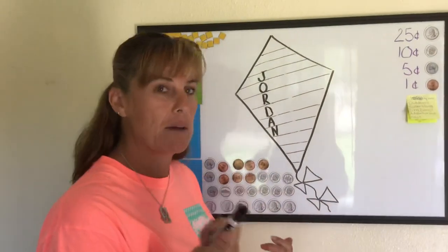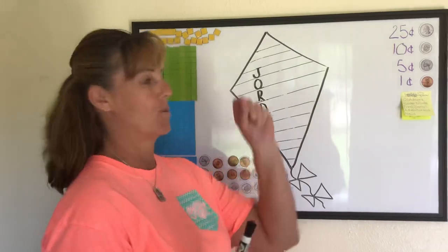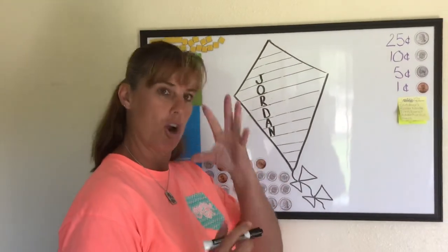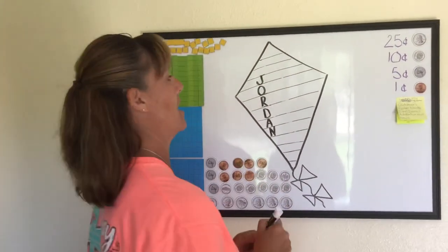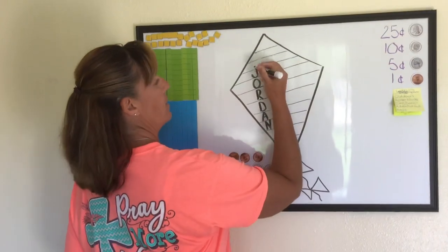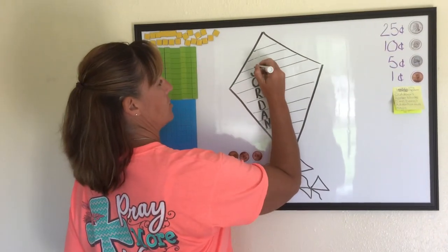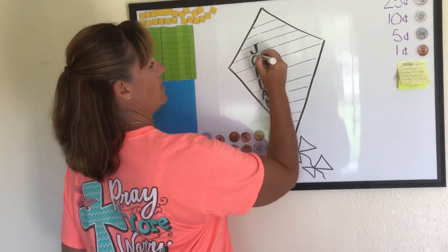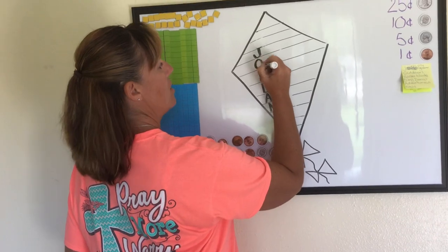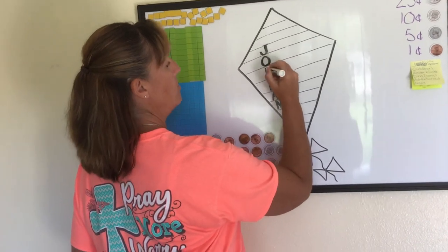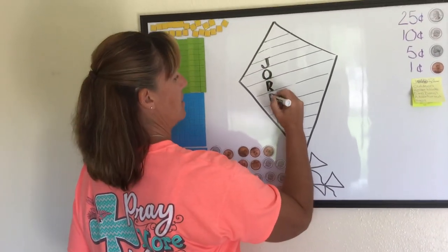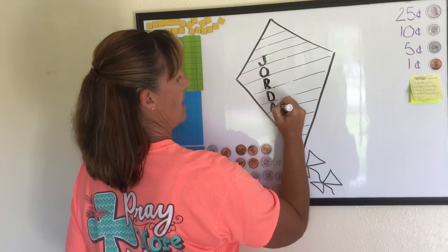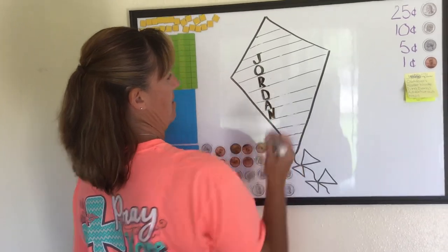If you have a big black marker or a pencil, write it really, really deep and dark so it stands out. Write all of the initials for your name. For Jordan, it's J-O-R-D-A-N.